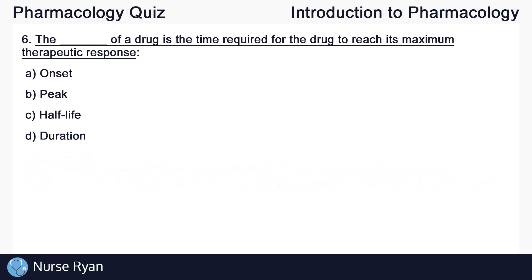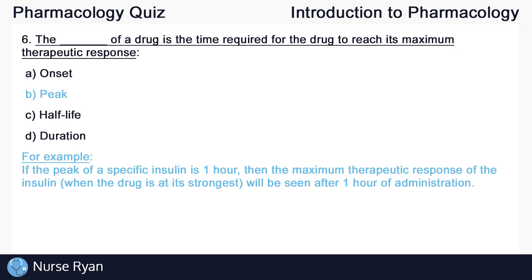Question six: The blank of a drug is the time required for a drug to reach its maximum therapeutic response. The answer here is B — peak. The key is the maximum therapeutic response. For example, if the peak of a specific insulin is one hour, then the maximum therapeutic response of the insulin — when the drug is at its strongest — will be seen after one hour of administration. That's the peak.